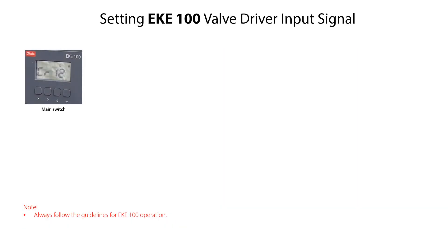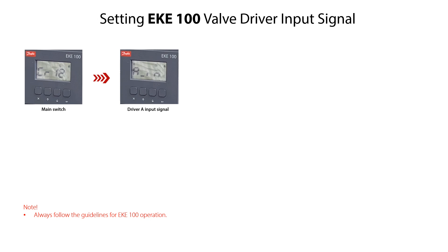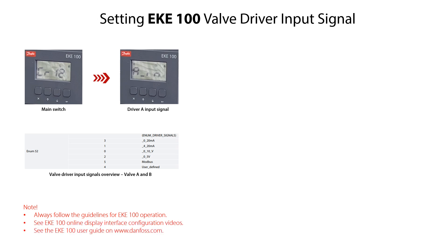To configure the EKE100 valve driver input signal for valve A, from the main switch CR12 mode, press the arrow down key several times to access the driver A input signal, specified as AIN. Press the enter key to access the available input signals. You can see the different values and corresponding input signals in the overview shown here. Press the arrow up or arrow down keys to get the needed value, then press the enter key to confirm the value and return to the AIN mode. Once set, press the arrow up key to return to the main switch CR12 mode.